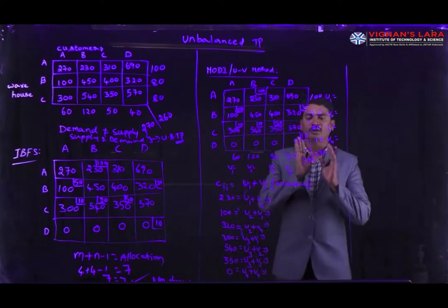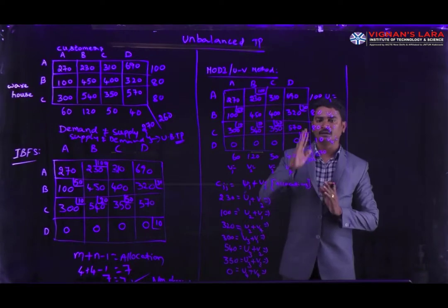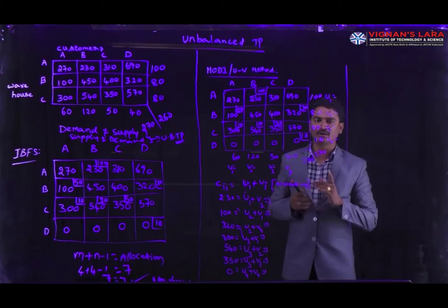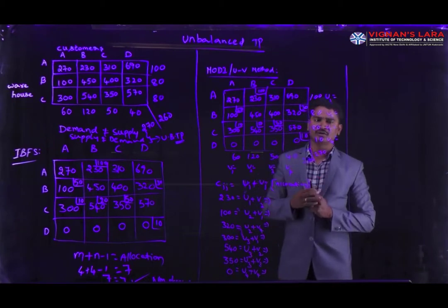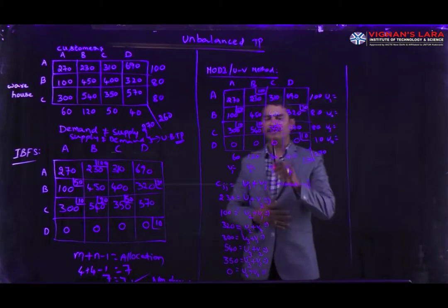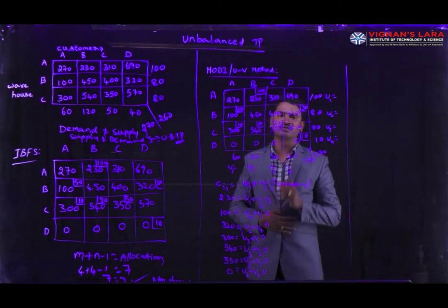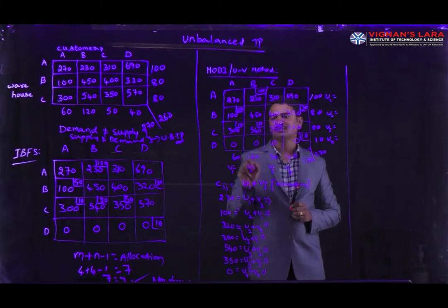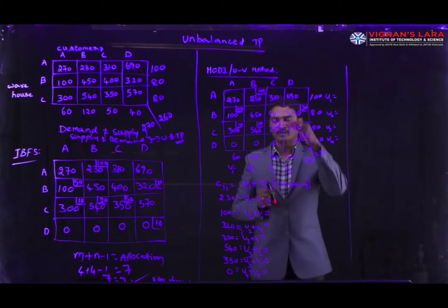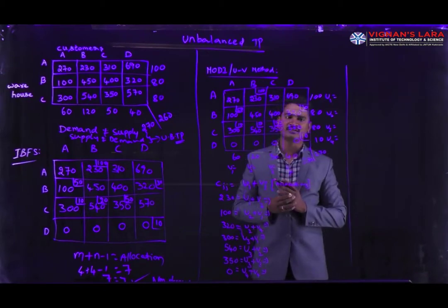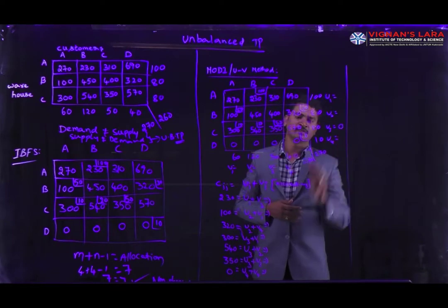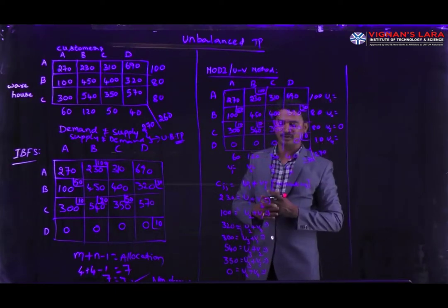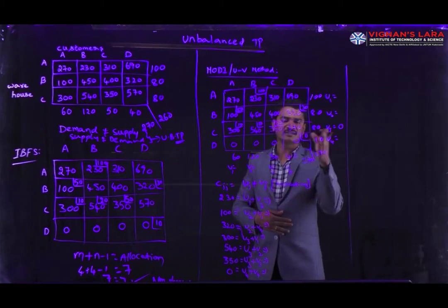We assume any one shadow price value equal to 0. We can take any one randomly, or based on the row or column with the maximum allocations. Row 1 has 1 allocation, row 2 has 2, row 3 has 3, and row 4 has 1. Row 3 has the maximum allocations, so I am going to take u3 equal to 0.